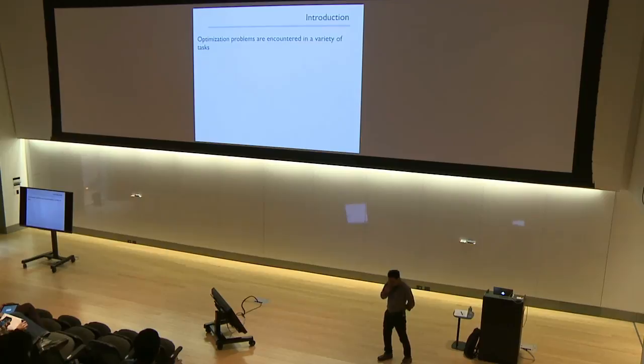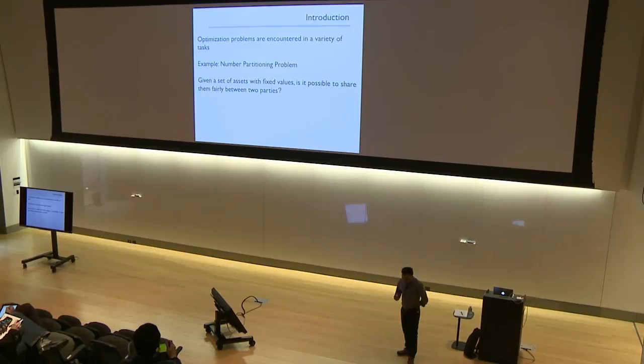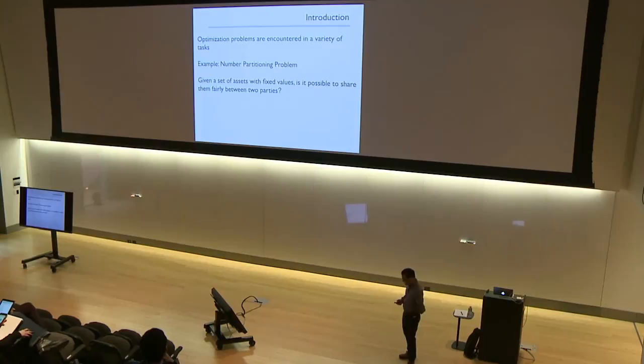As an introduction, optimization is something we can use in many tasks. One of the examples of an optimization problem I am going to use in this talk is the number partitioning problem. What this number partitioning problem boils down to is: if I give you a set of numbers — a set of assets with fixed values — is it possible to share them fairly between two parties?